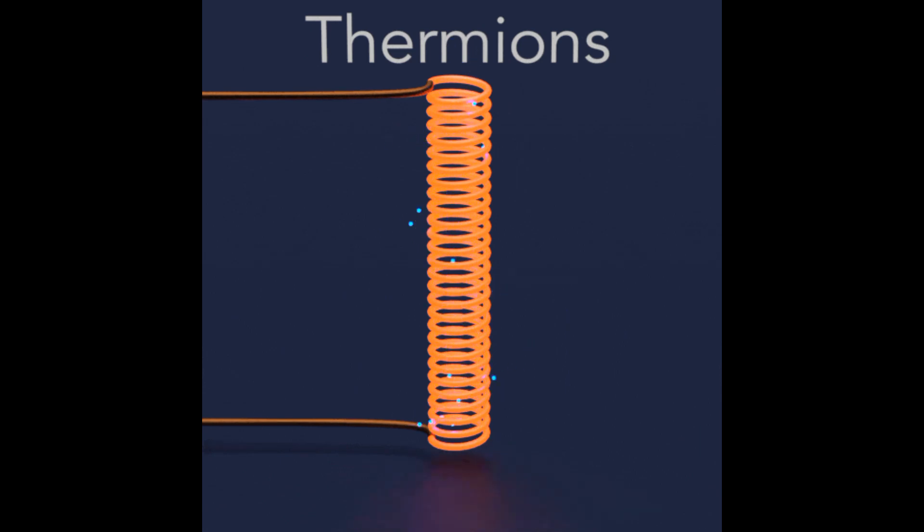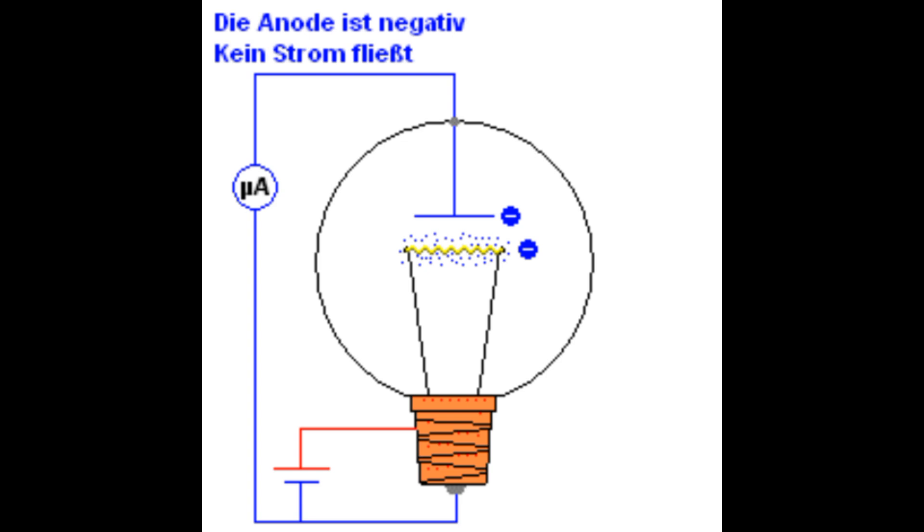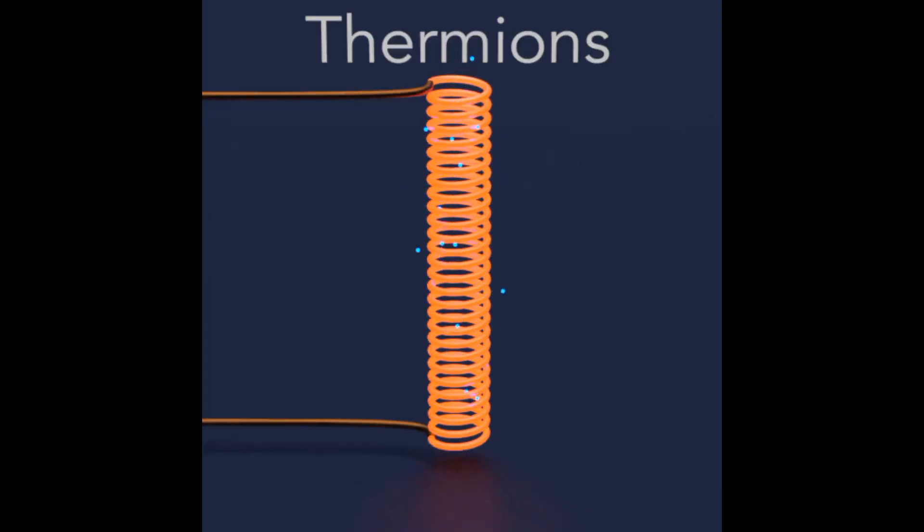In the glow of Edison's laboratory, electrons were observed dancing within a vacuum, liberated from a heated filament. This phenomenon, later termed the Edison effect, laid the groundwork for what would become the mesmerizing world of vacuum tubes.